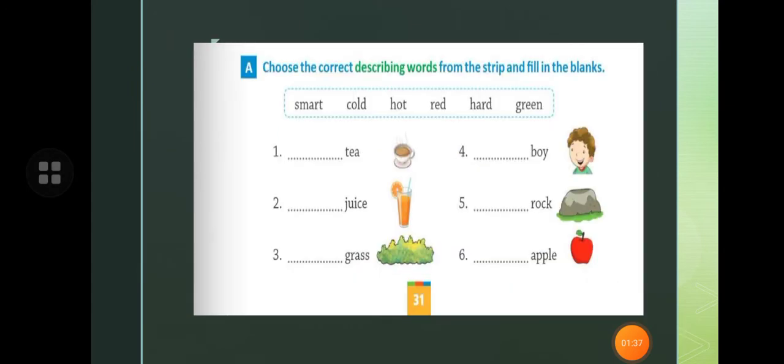Children, look at the exercise. Choose the correct describing word from the strip and fill in the blanks. Here so many describing words are given in the box. You will write, like tea. Which type of tea? Hot tea. And juice. Cold juice.